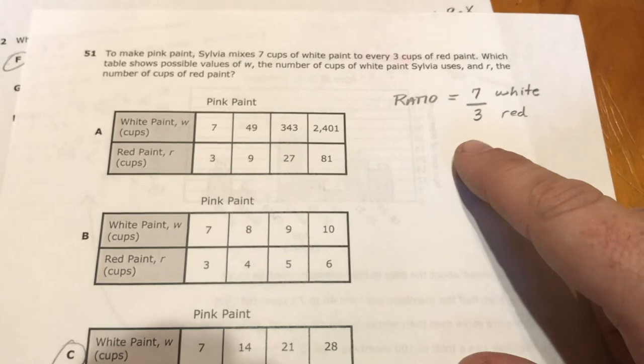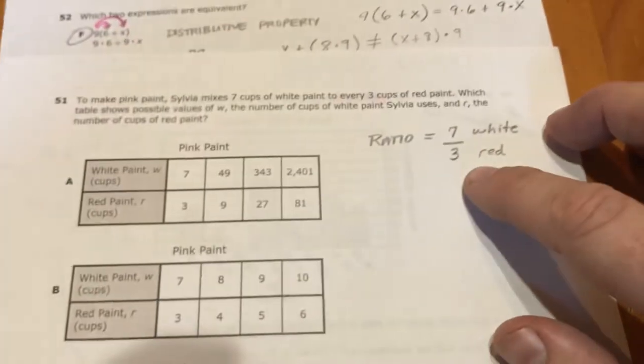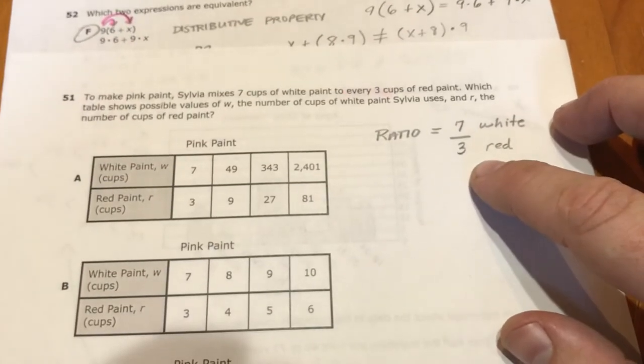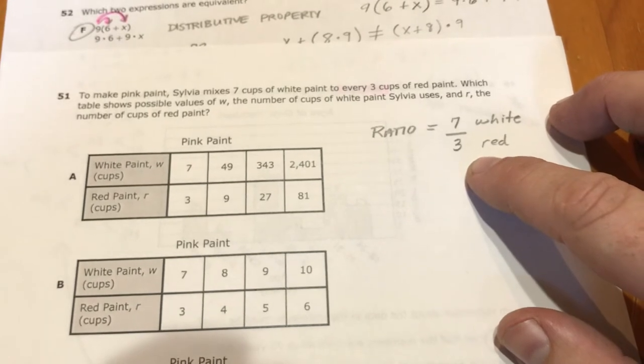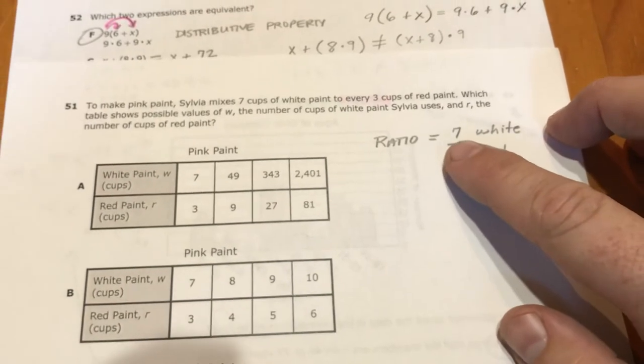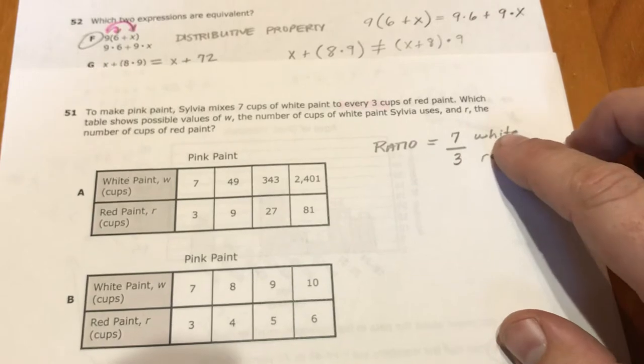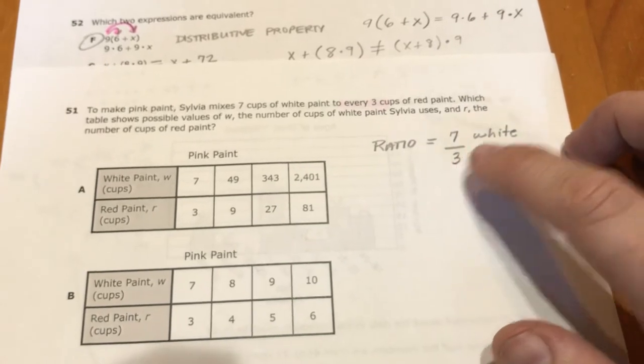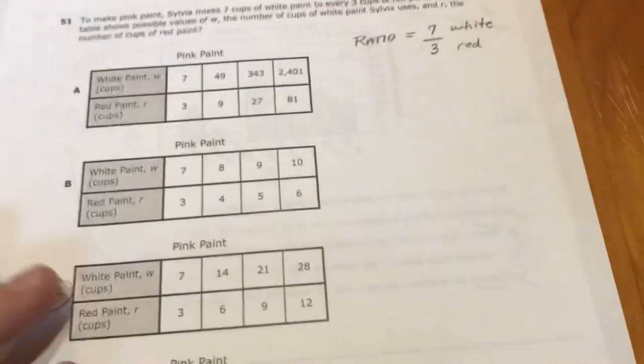So if you want to make more of that paint, that means if you want to keep the color the same, no matter how much paint you mix or how much you make, you have to do, if you're going to add 7 more white, you got to add 3 more red. 7 more white, 3 more red. 7 more white, 3 more red. 7 more white, 3 more red.